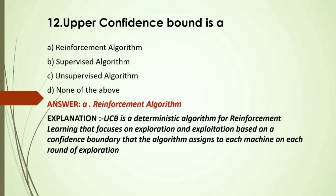MCQ: Upper confidence bound is — A) A reinforcement algorithm; B) A supervised algorithm; C) An unsupervised algorithm; D) None of the above. Answer: A, reinforcement algorithm — upper confidence bound is a deterministic algorithm for reinforcement learning that focuses on exploration and exploitation based on the confidence boundary assigned to a machine on each round of exploration.